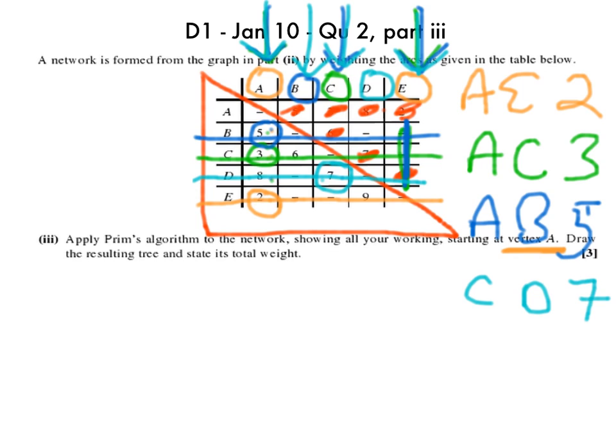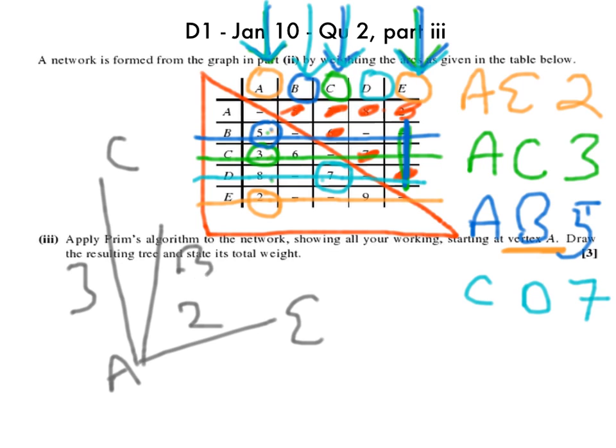And the final thing the question asks me to do is to draw the minimum spanning tree, which is what I should do. So I can just say A to E is 2, and A to C is 3, A to B is 5, and C to D is 7.